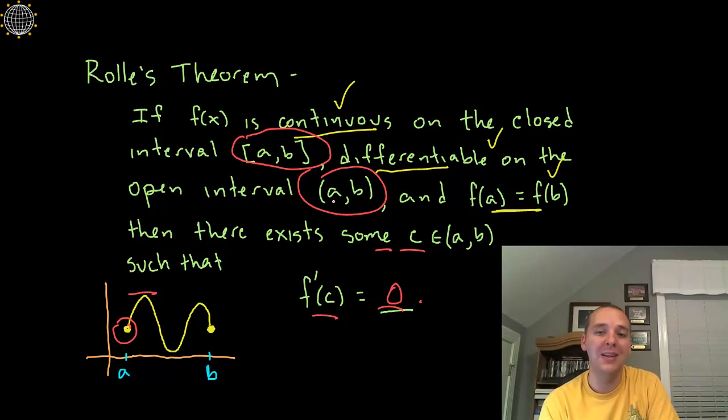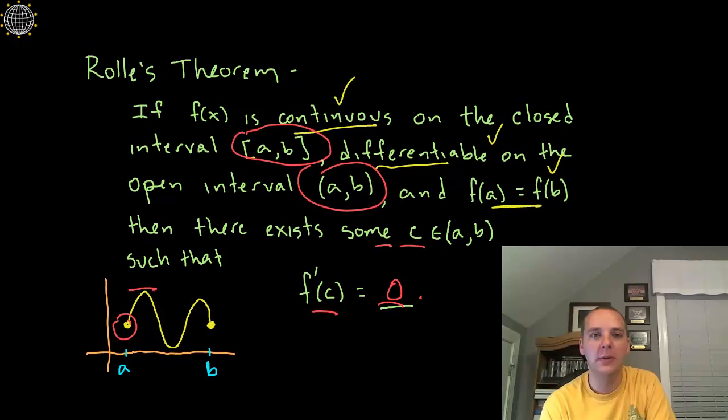So to exclude the differentiability of the endpoints, we just say open interval instead. However, it can obviously be continuous on the closed interval, but we exclude the endpoints just simply when we are talking about differentiability.